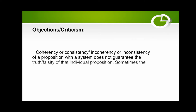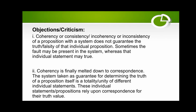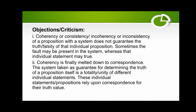Objection and criticism: coherency or consistency of a proposition within a system does not guarantee the truth or falsity of that individual proposition. Sometimes the fault may be present in the system, whereas the individual statement may be true. Furthermore, coherence finally melts down to correspondence — the system taken as a guarantee for determining the truth of a proposition is itself a unity of different individual statements, and these individual statements rely upon correspondence for their truth value.